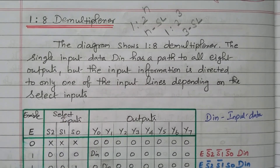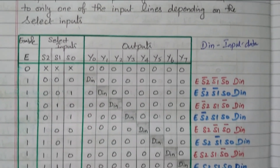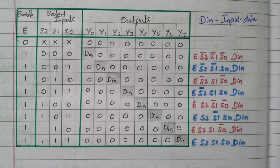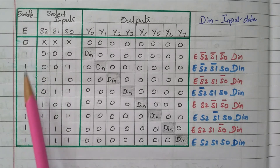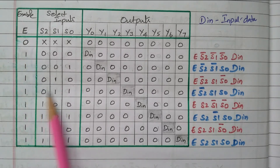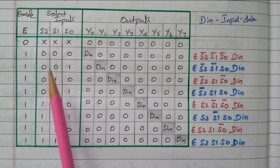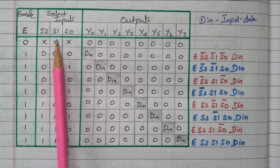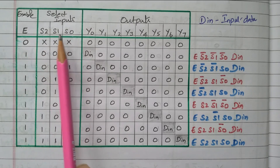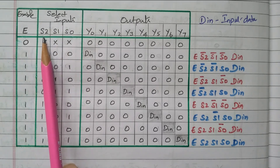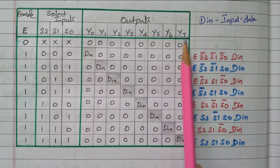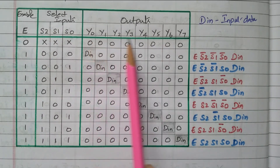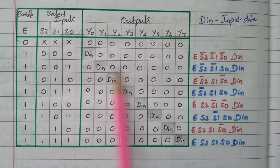Now we will see the truth table showing how the data is routed to 8 different positions. There is an enable input: if enable is 1 then only the circuit will be activated; if enable is 0, the circuit is deactivated. Then the selection lines — there are 3 selection lines: S0, S1, and S2. The output consists of 8 different outputs, 2^3, from Y0, Y1, Y2 up to Y7.